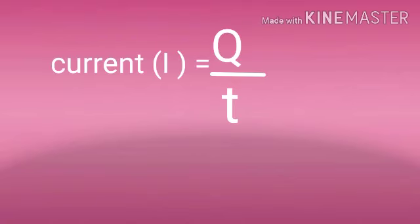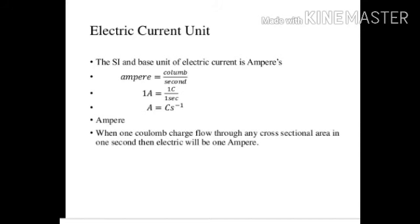Now let's find out the unit of current. The formula for current is I = Q/T, where I is the current, Q is the charge, and T is the time. The SI unit of current is ampere, and ampere equals coulomb per second. So 1A = 1C/1S, where C is coulomb and S is second. 1 ampere current is said to flow in a conductor if 1 coulomb of charge flows through it every second.